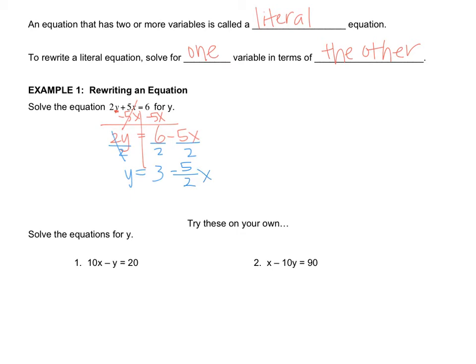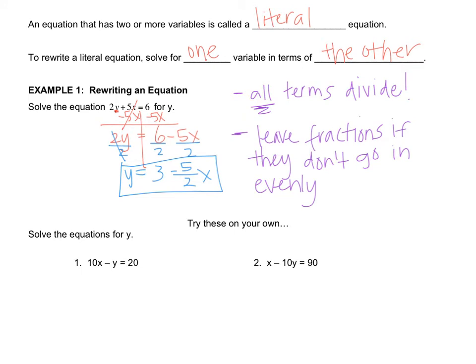So on the side, I'm going to put two notes that I want you to write. The first one is that all terms divide. And that's in reference to this piece right here where I divided everything by 2, not just once to the left and once to the right. I divided once to everything. The second thing that I want you to write is to leave fractions if they don't go in evenly. So even though you can do 5 divided by 2, I'm going to encourage you to leave it as the fraction, and you'll understand why as we go through this chapter. So what I have as my final answer is y equals 3 minus 5 over 2x.